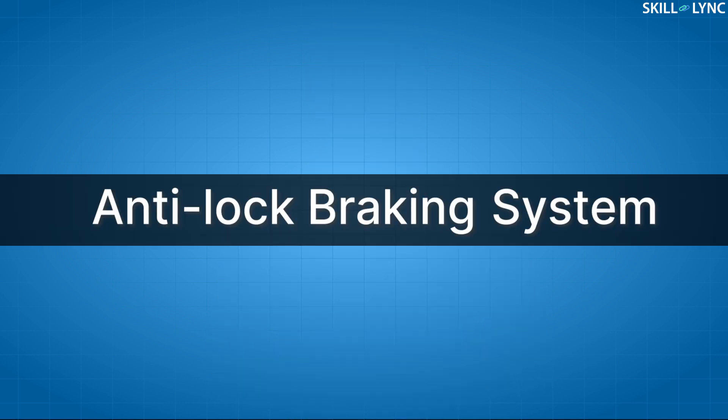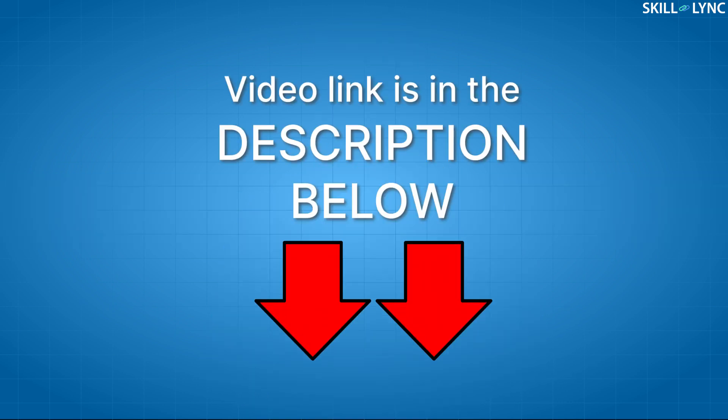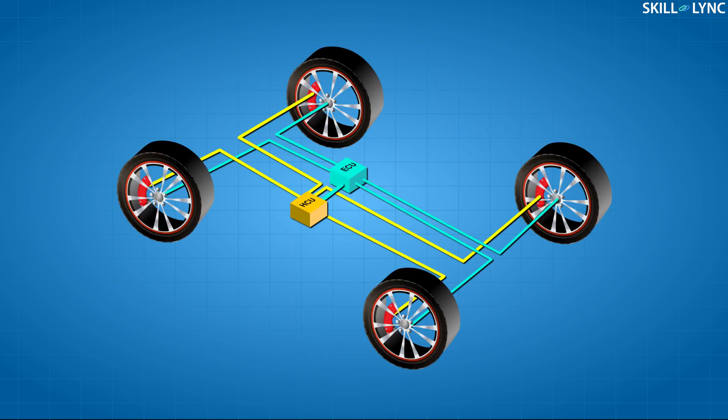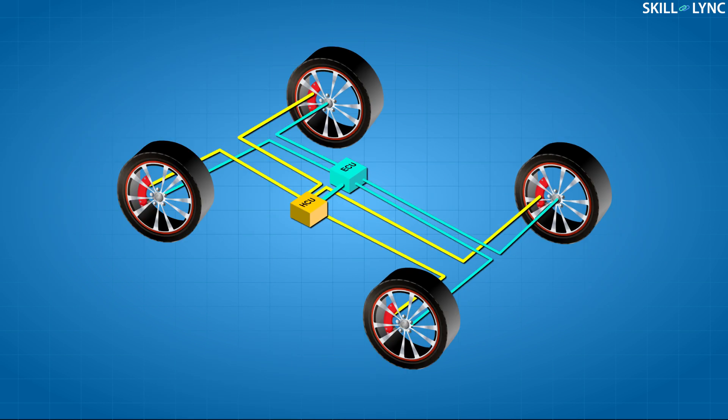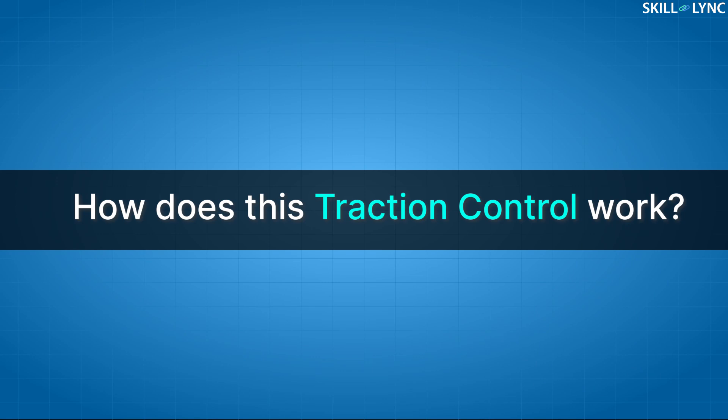When it comes to working, the operation of the traction control system is more or less similar to the working of the anti-lock braking system. You can watch our video on ABS — it is given in the description. The traction control system shares the wheel speed sensors, the electronic control unit, and the hydraulic control unit with the ABS. The TCS is integrated into the ABS, so they are considered as a single unit in modern vehicles.